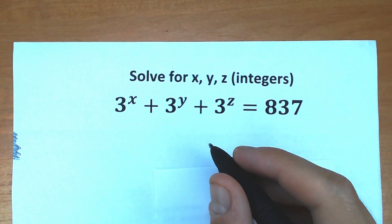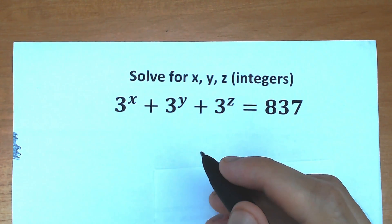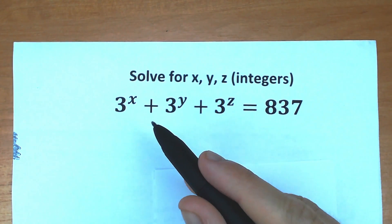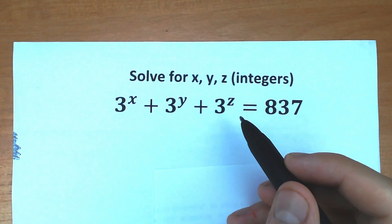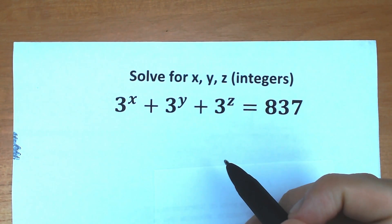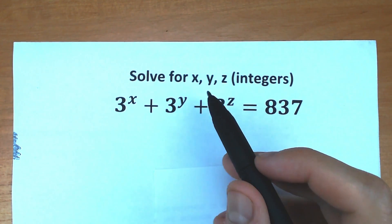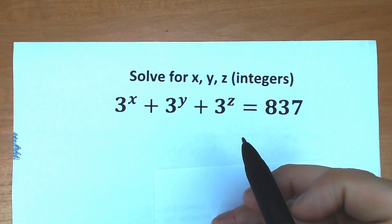Happy to see you here on my channel. I'm Mathematics, and today we have a really great challenge: 3 to the x plus 3 to the y plus 3 to the z equal to 837, and we need to find x, y, and z. Let's do this.